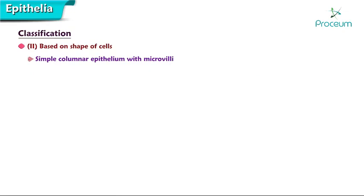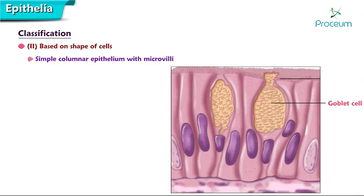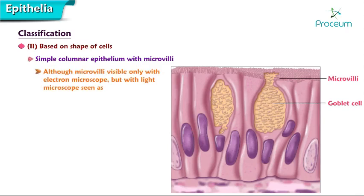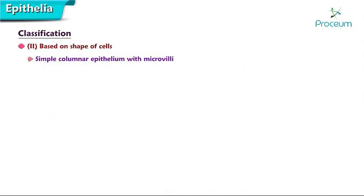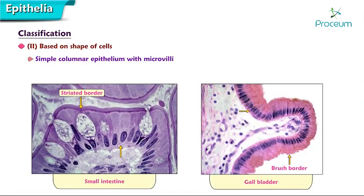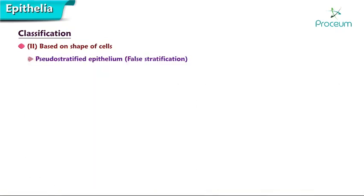Simple columnar epithelium with microvilli: the surface is covered with microvilli, visible only with the electron microscope. With a light microscope, the region of microvilli is seen as a striated border when arranged regularly, or as a brush border when irregularly placed. Occurrence: with a striated border in the small intestine, and with a brush border in the gallbladder. Function is absorption. Pseudostratified epithelium, also known as false stratification, is classified next.